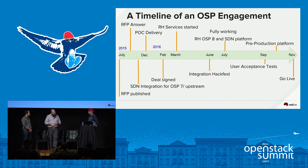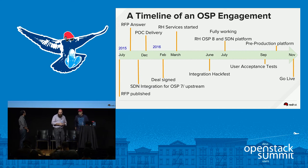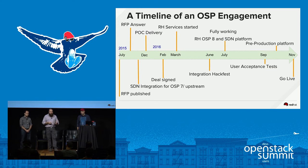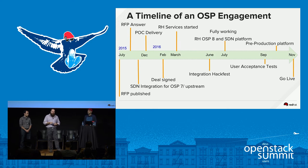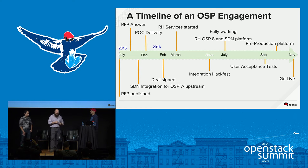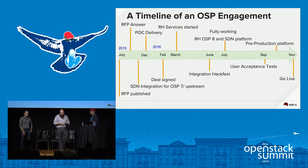Really quickly on what the timeline of this engagement looked like — which is actually pretty similar to some of these more complex engagements we've been involved in. Around the middle of 2015, we had an RFP that got published. We put together an answer, did some POCs, and really investigated what the upstream SDN integrations looked like in OSP 7 at the time. There wasn't a lot there — so it was really figuring out what we would need to do to get to where our customer wanted us to be. The deal signed pretty quickly after the POC.